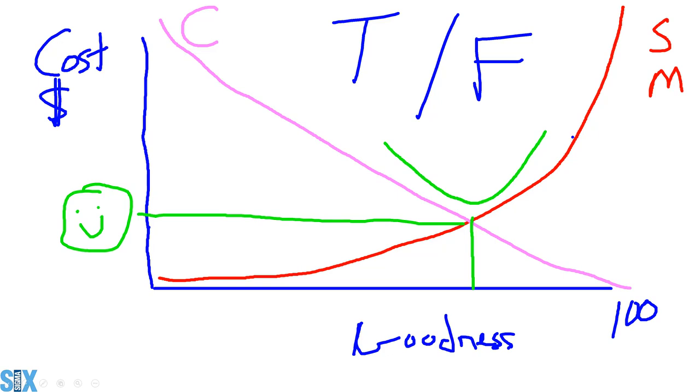And let's think about this. If this is true, then why in the world would we have process improvement? Why would we have teams? Why would we have Six Sigma green belts and black belts? It wouldn't really make any sense because everybody knows that our company is already running at the optimal quality level.